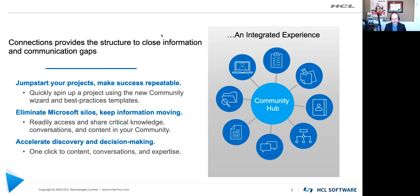What's really exciting about this release — in Connections 7, we have the ability to bring all of your employees and communities together to solve business problems, share expertise, and contribute to your company's culture faster than ever. In version 7, we make it easier with three key areas of innovation. First, we can jumpstart your projects and make prior project success repeatable — you can quickly spin up a project using the new community wizard and best practice templates, 80% faster.